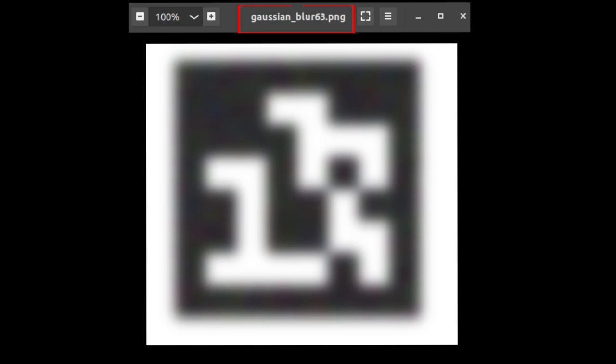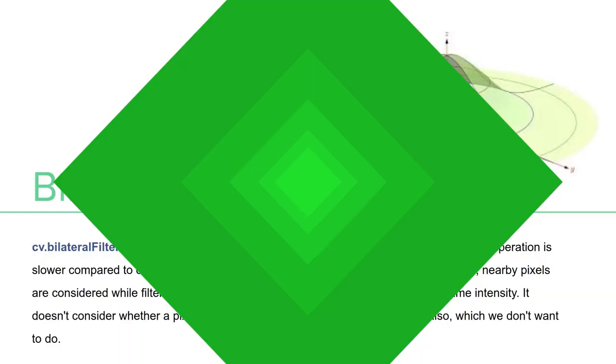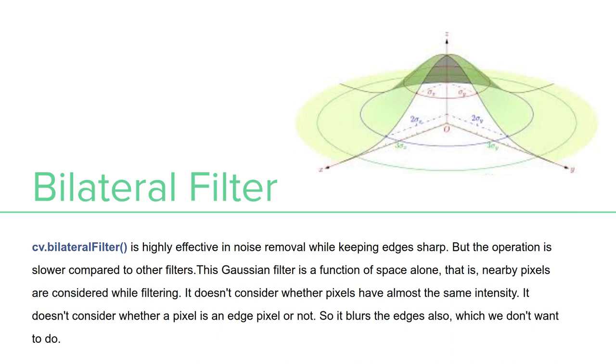So after a point you don't even see the noise because if I blur the real image and I blur the noisy image, my output will be pretty much the same. So we do this till 69 by 69 kernel.